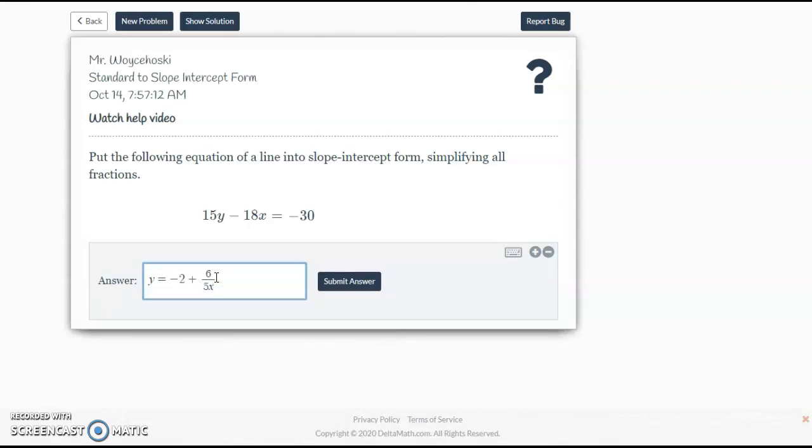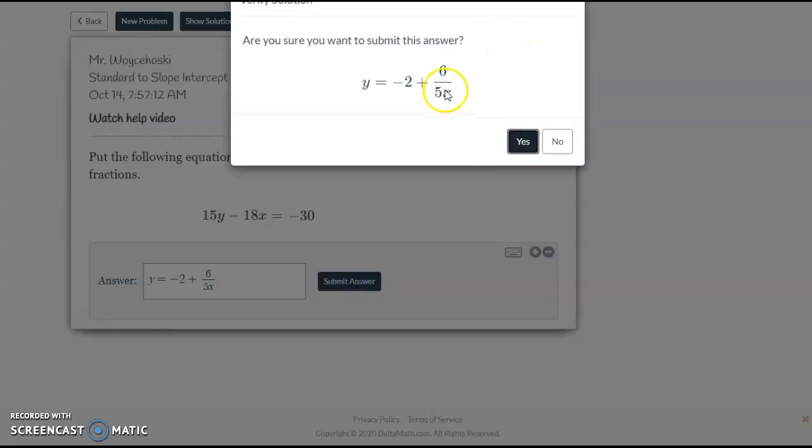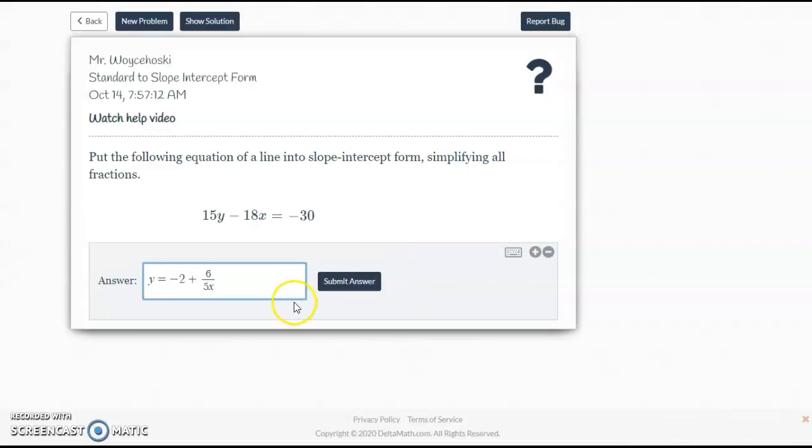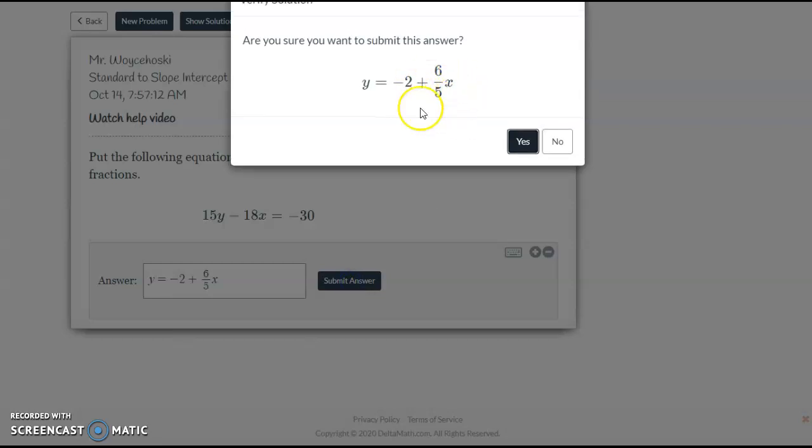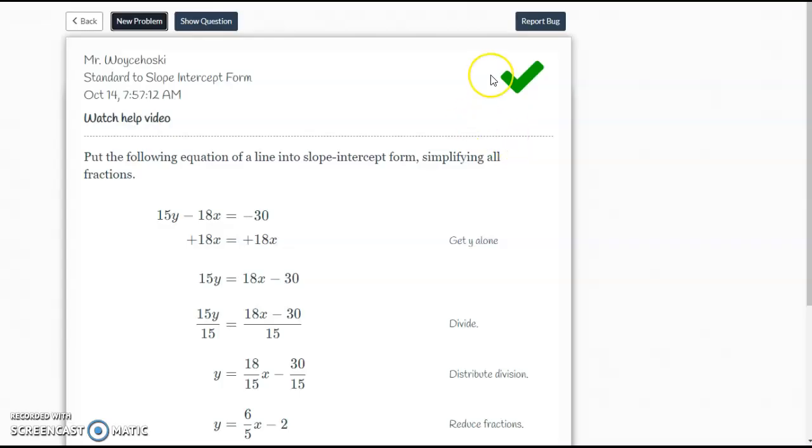So y equals negative 2 plus 6 fifths x. Again, I don't want the x down there. That's what a lot of people are going to do. If you go to hit submit answer, you're going to notice the x is in the bottom. We don't want that. So if you get that, just hit no. Come back. Hit the right arrow key here. Watch this little cursor right here. It's going to jump up to the right. Hit the right arrow on your number key, and it jumps up there. Then you can put your x. Submit answer. Now it looks right. Hit yes, and we're good to go.